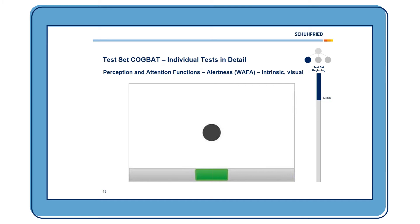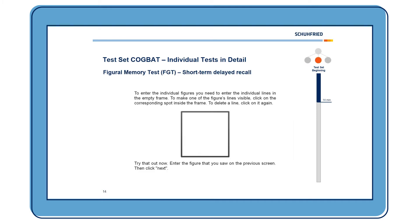A black circle appears on the screen and when this happens the client must press the green button. After testing for alertness, the second phase of the FGT follows, measuring short-term delayed memory in a free recall. An empty frame is presented and the task is to make the lines of the figure visible by clicking on the corresponding spot inside the frame, rebuilding the figures learned in the learning phase.